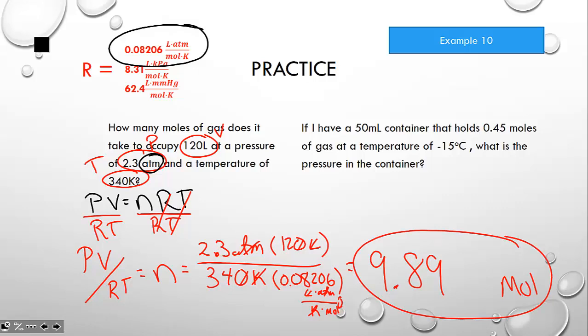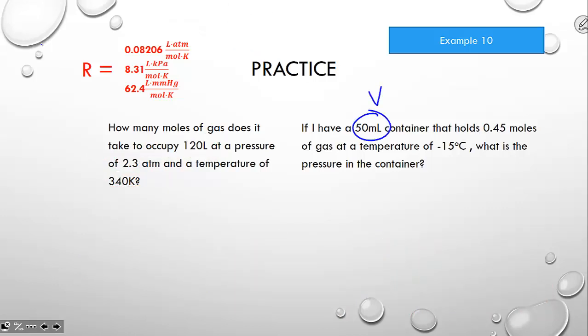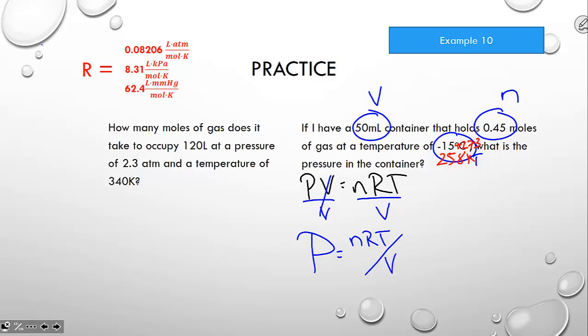That problem was straightforward. Our next one throws a couple curveballs at us. If I have 50 milliliters of a container that holds half a mole at a temperature of negative 15 degrees Celsius, what is the pressure in the container? First thing you might have noticed is temperature cannot be in degrees C. We will not talk about the temperature of a gas in degrees Celsius. When you see degrees C, we add 273 to get 258 kelvin. Our formula is PV equals nRT. If I want P by itself, I can divide by V on both sides.